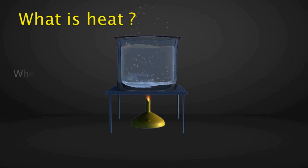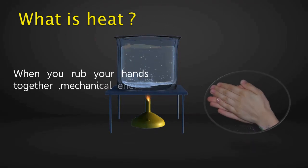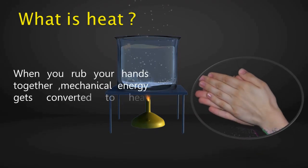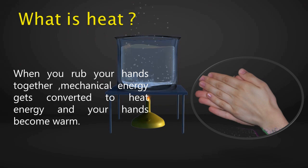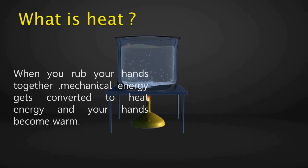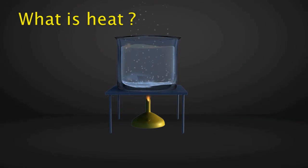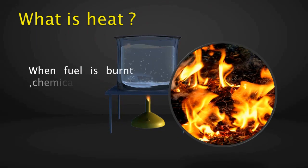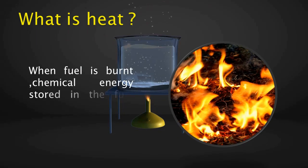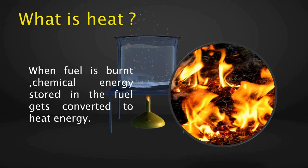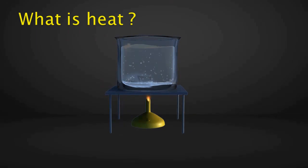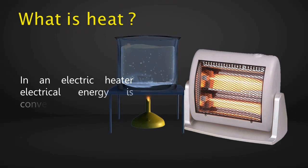For example, when you rub your hands together, mechanical energy gets converted to heat energy and your hands become warm. When fuel is burned, chemical energy stored in the fuel gets converted to heat energy. In an electric heater, electrical energy is converted to heat energy.